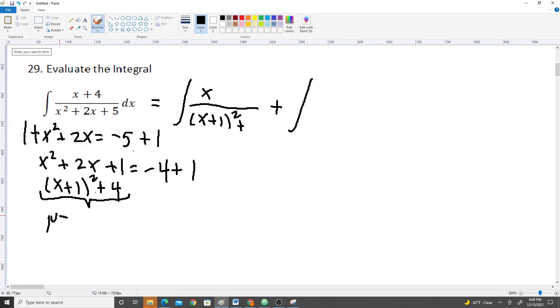So we make u equal to x plus 1, and then we want our substitution to be, the formula for a trig substitution is u is equal to a tan theta, because we're going to use tangent, because we have an x squared plus an a squared, and our a squared is 2 squared. So we do plug those in. Our u is x plus 1, and our a is 2 tan theta.